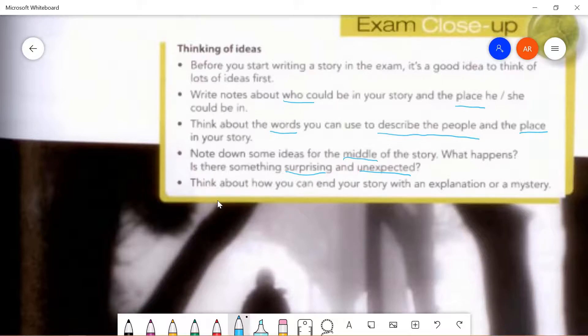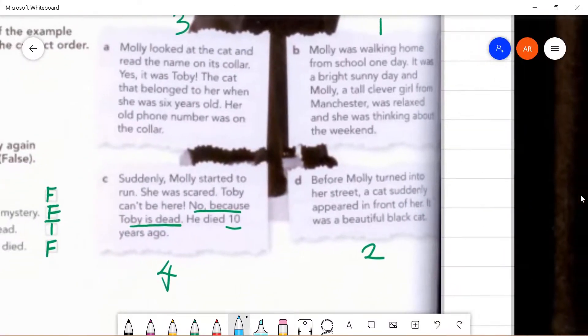And the last one, think about how you can end your story with an explanation or a mystery. Ending. It could be an explanation or it could be a mystery. What does it mean by a mystery? Just like the sample story here. Look at the fourth paragraph here. Paragraph C. Suddenly, Molly started to run. She was scared. Toby can't be here. No. Because Toby is dead. He died 10 years ago. This is an ending with mystery.